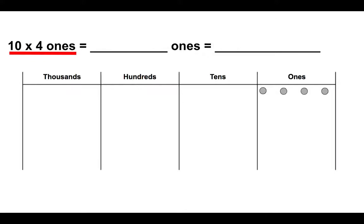We'll start by drawing one group of four ones, then two groups, three, four, five, six, seven, eight, nine, ten groups of four ones.